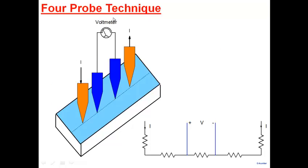Instead of two probes, there's a popular method called the four-probe technique. Four probes are placed on the sample: through the outermost two probes, current is forced; the inner two probes are used only for measuring voltage — no current flows through them. This means you measure voltage in the middle of the sample, away from the contact regions, making the measurement much more accurate and unaffected by contact resistance.